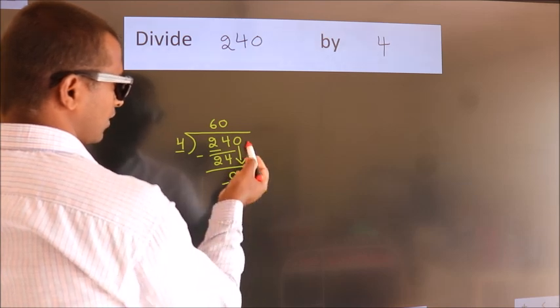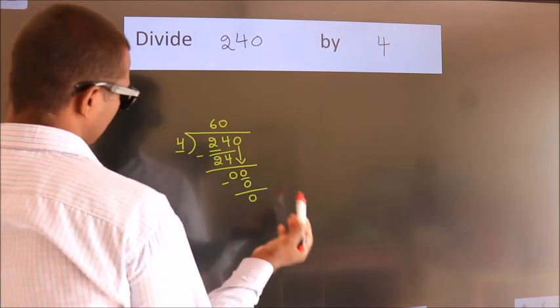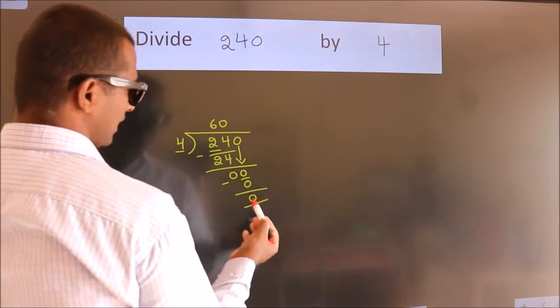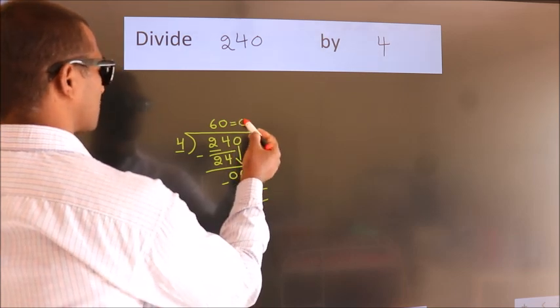After this, no more numbers to bring it down. And we got remainder 0. So this is our quotient.